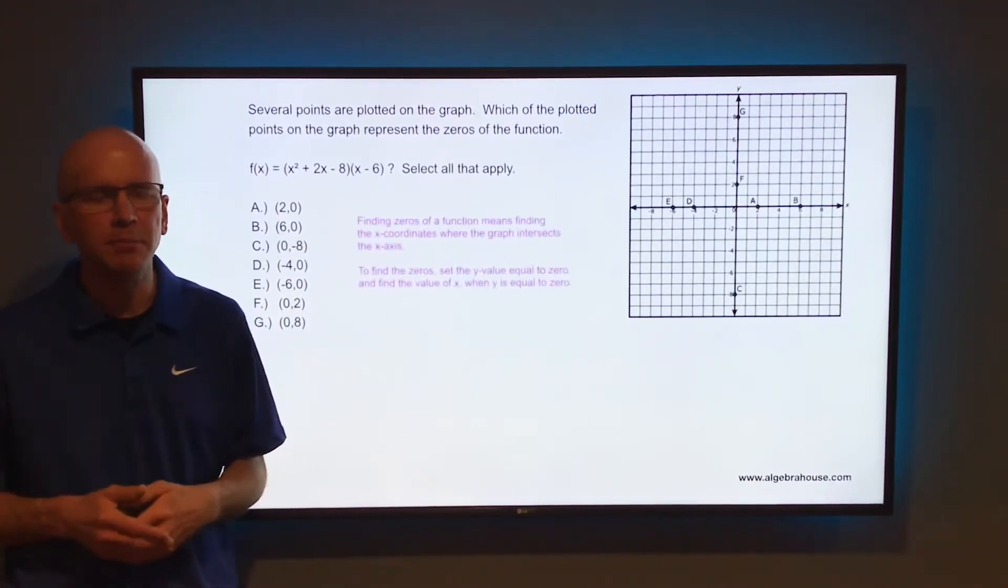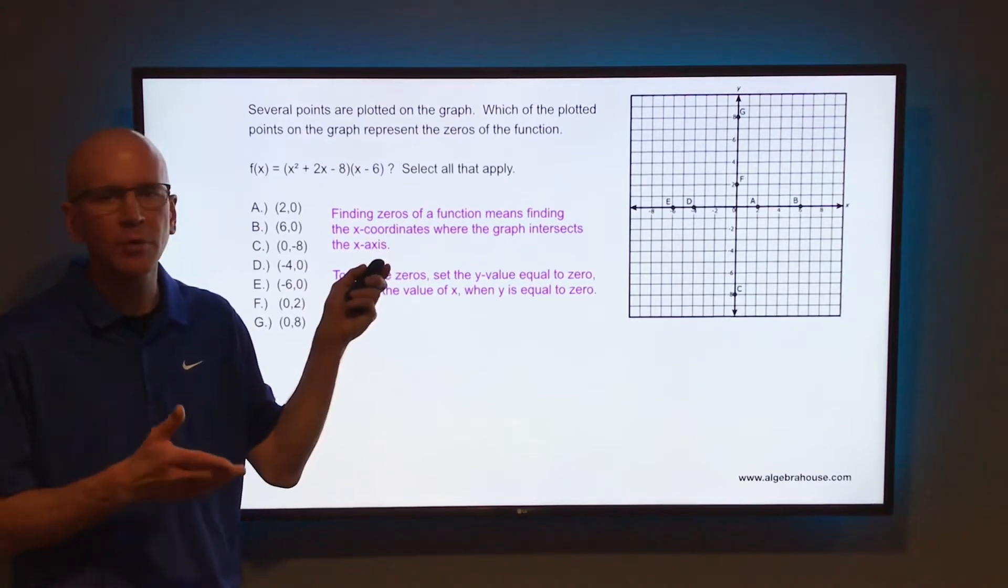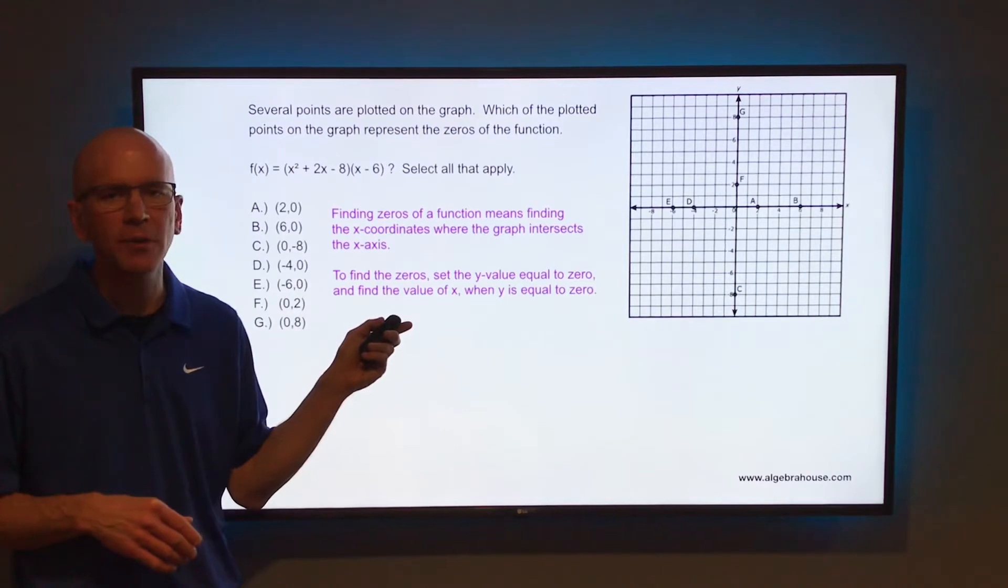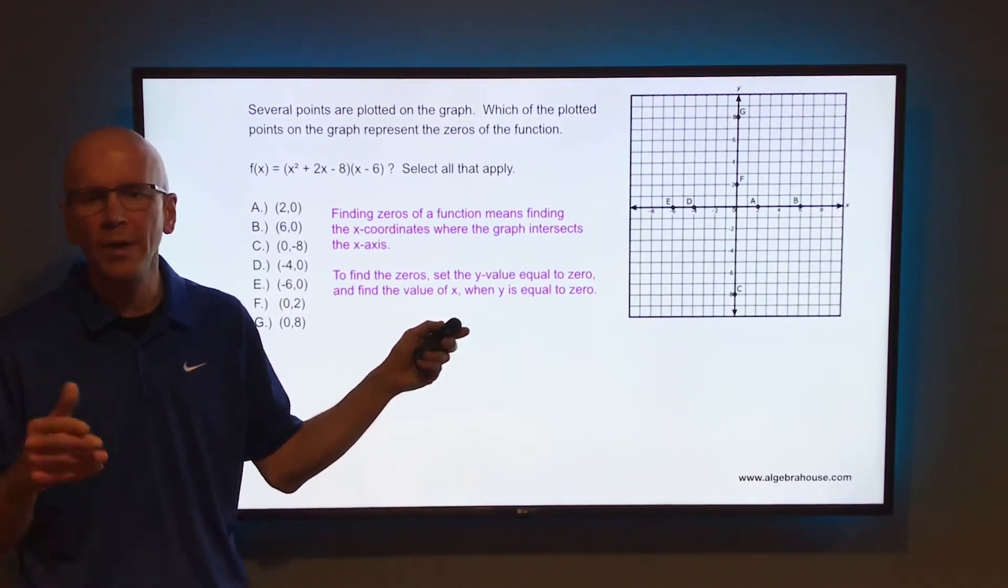To find the zeros of a function means you're finding the x-coordinates where the graph intersects the x-axis. To find the zeros, set the y value equal to zero and find the value of x when y is equal to zero.